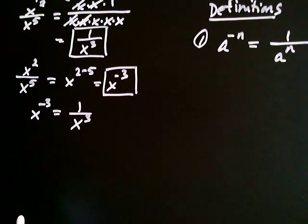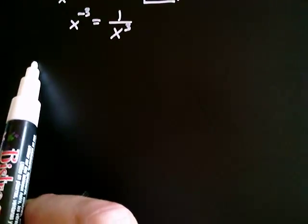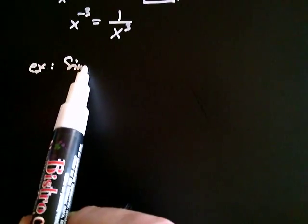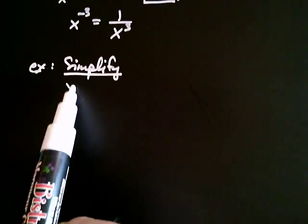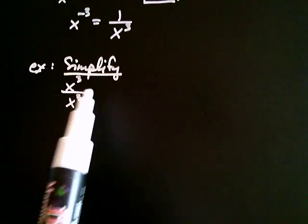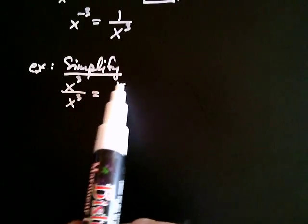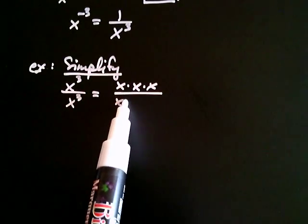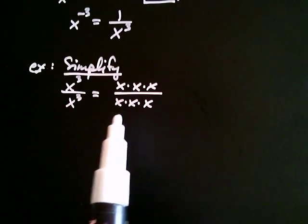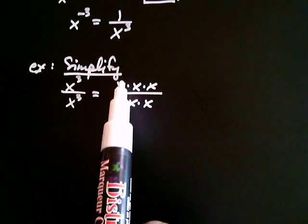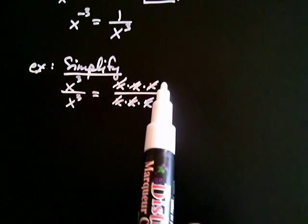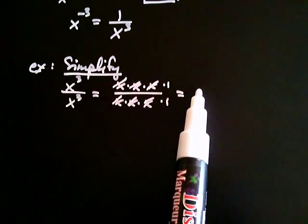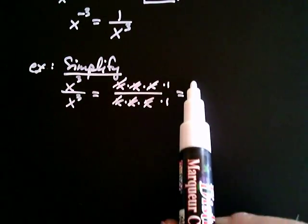Let's look at a second definition. In a similar fashion, consider simplifying x to the third over x to the third. Well, x to the third is x times x times x, and the same thing on the denominator. Because you have three x's in the numerator and three in the denominator, everything cancels. I'm left with one over one, which equals one. There's nothing wrong with doing it that way.